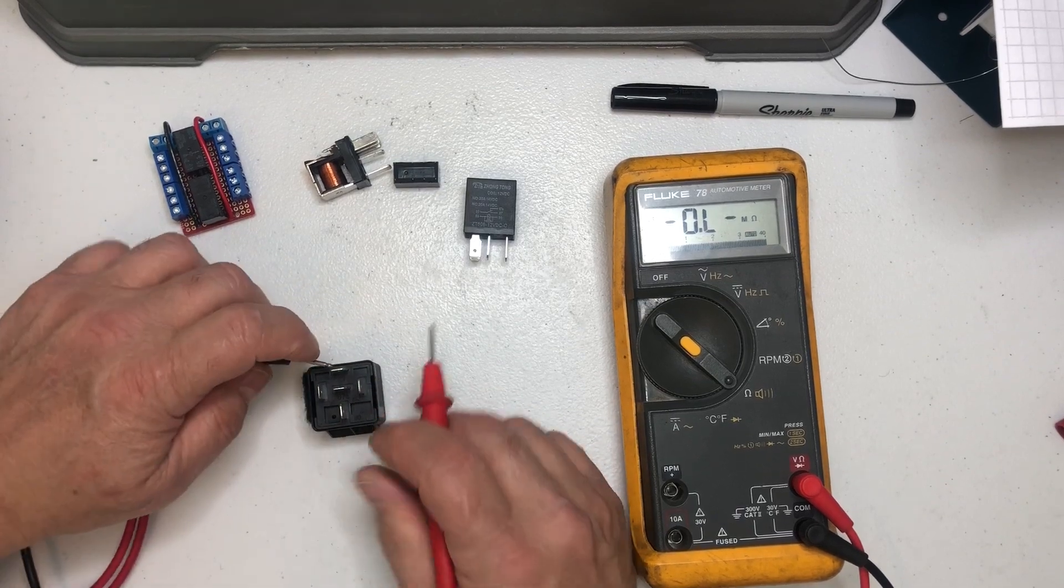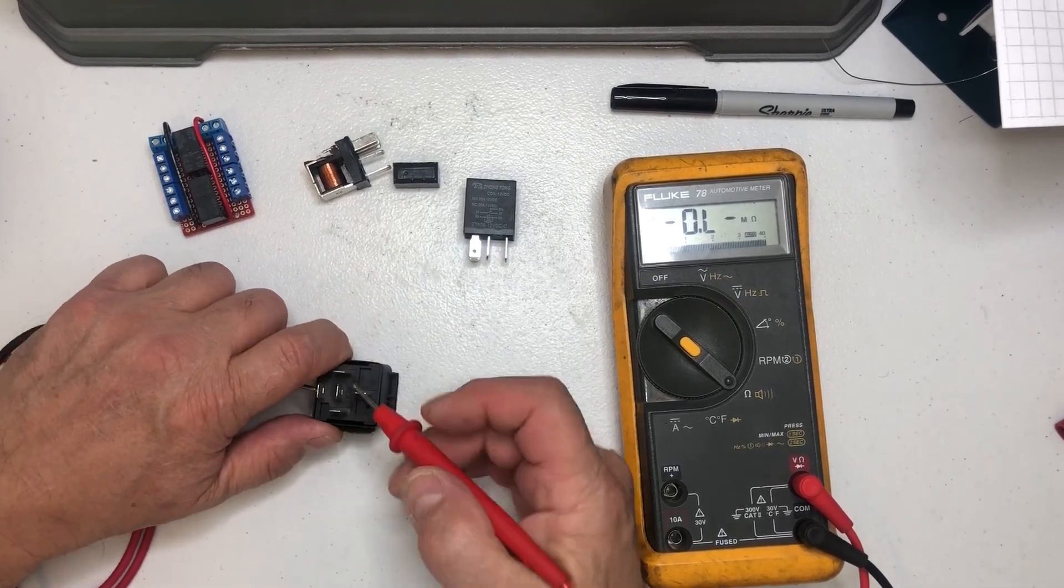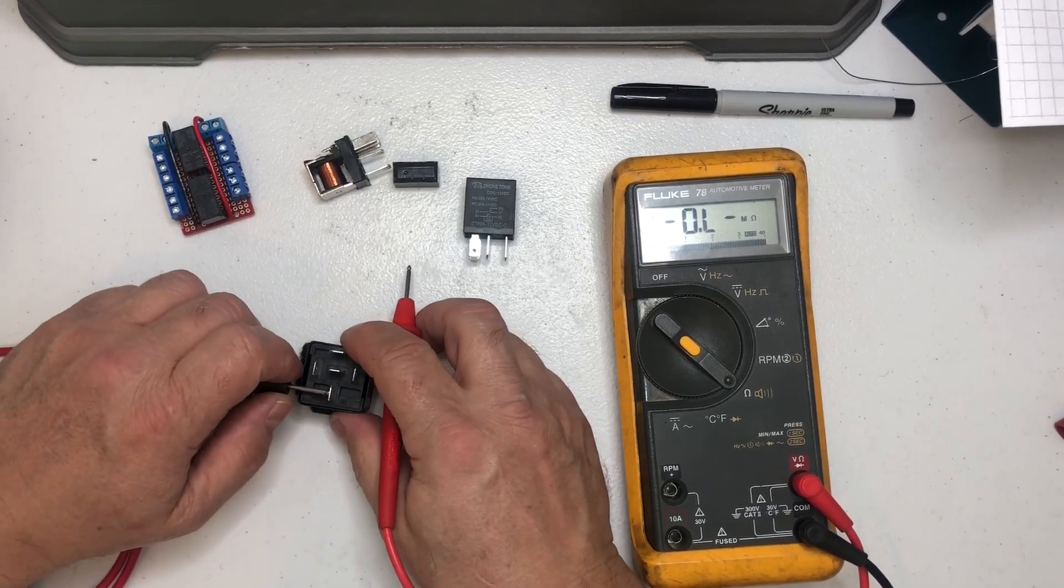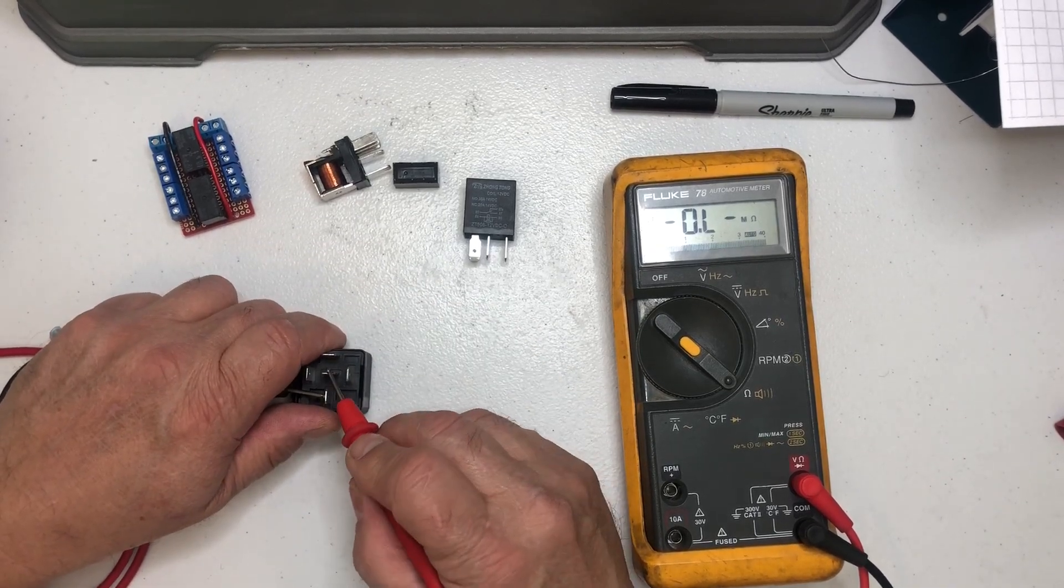So if you've got a relay and they're not in this configuration, you just check all of them. See that's open, that's open. So you can kind of figure out which your common is.